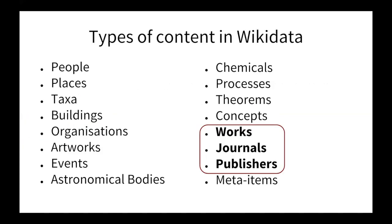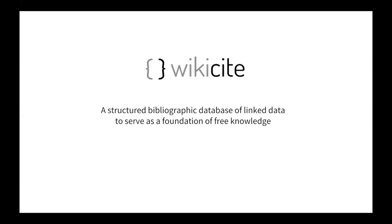The second part of this lightning talk is about a subset of items you can find today in Wikidata, which are about creative works. You can find a ton of stuff on Wikidata about people, buildings, artworks, events, molecules, and more. A sizable part of Wikidata is about creative works, and I want to talk about that in the context of the Wikisite initiative. Wikisite is an initiative built on top of Wikidata to create a structured bibliographic repository of citable sources as structured data, with the immediate goal of supporting the work volunteer communities are doing in Wikimedia projects.